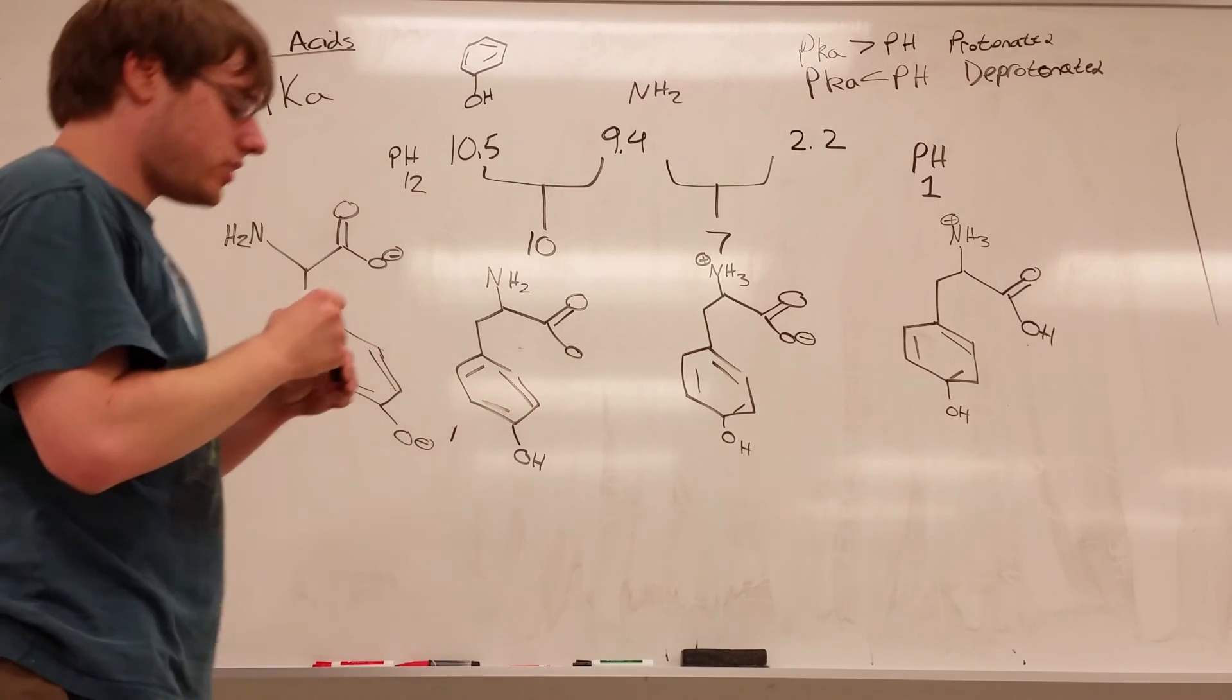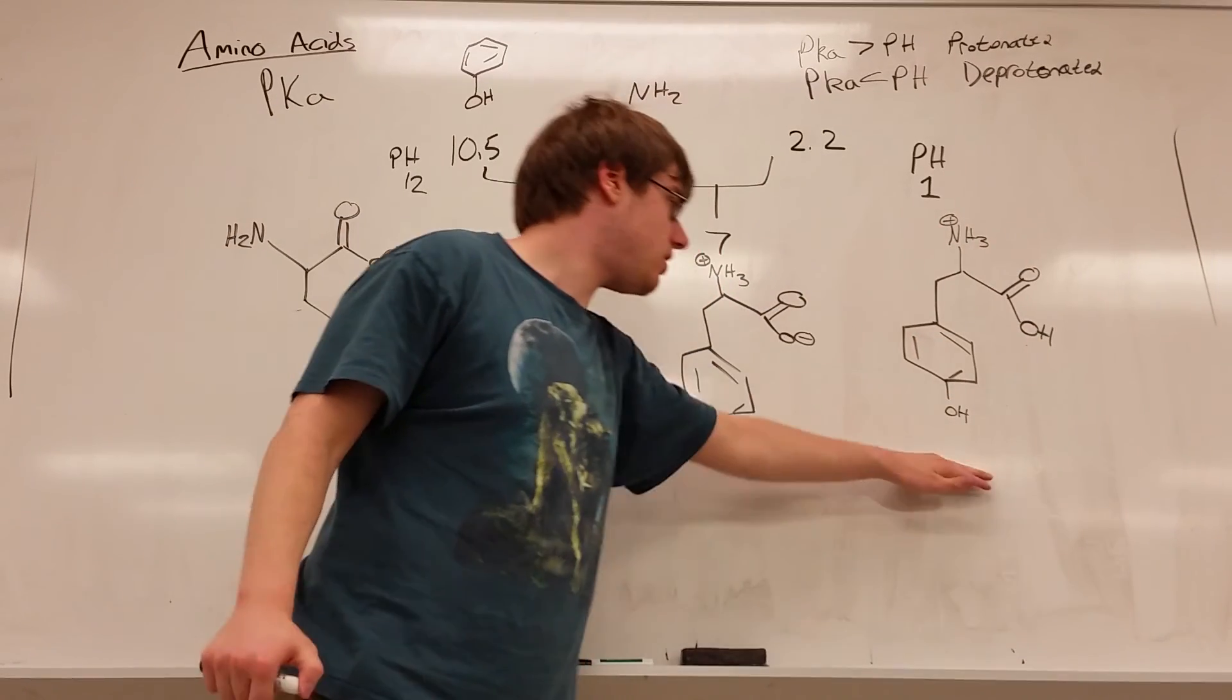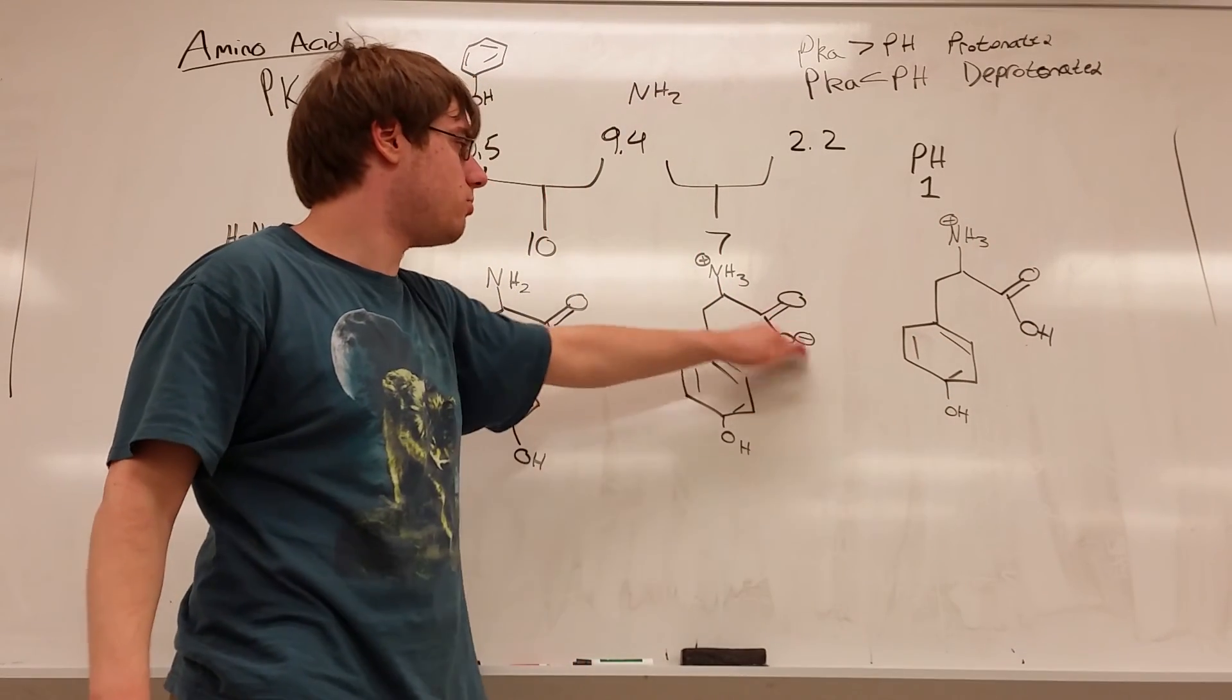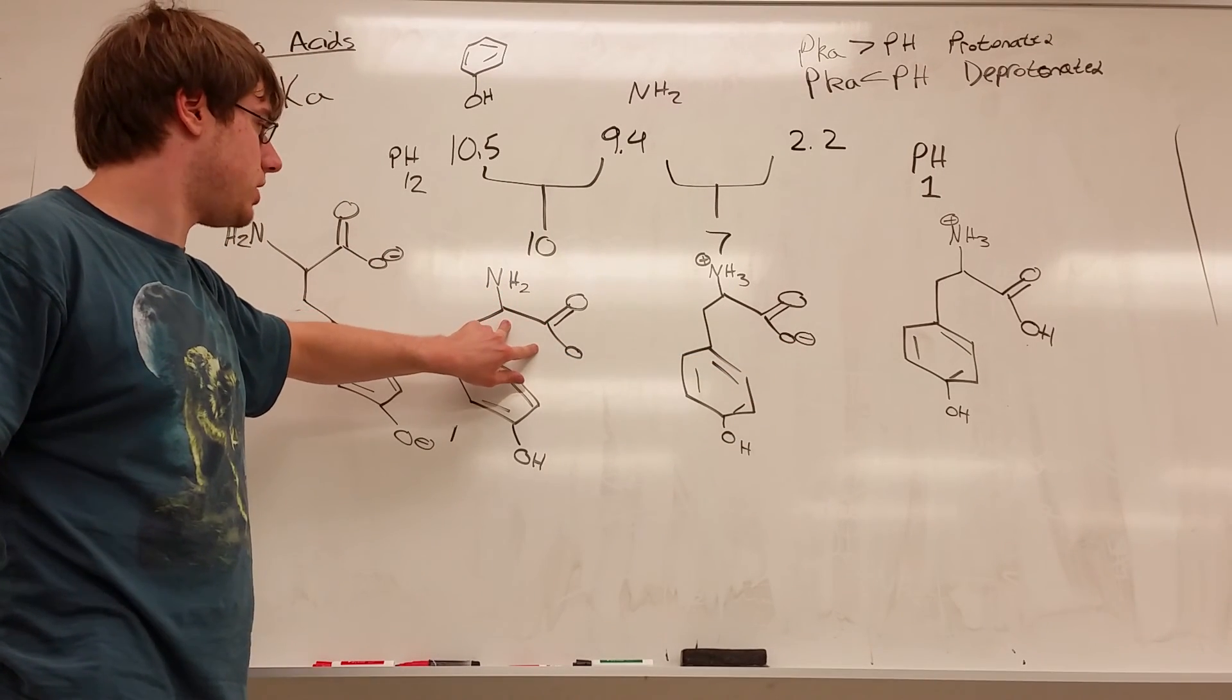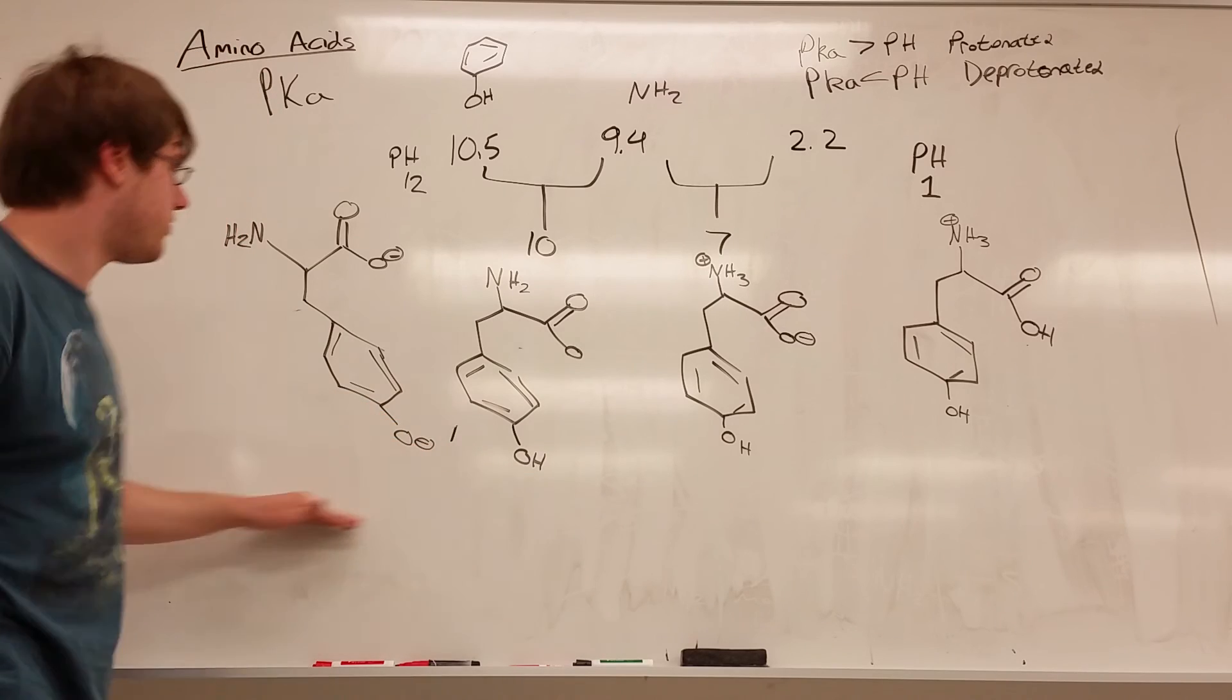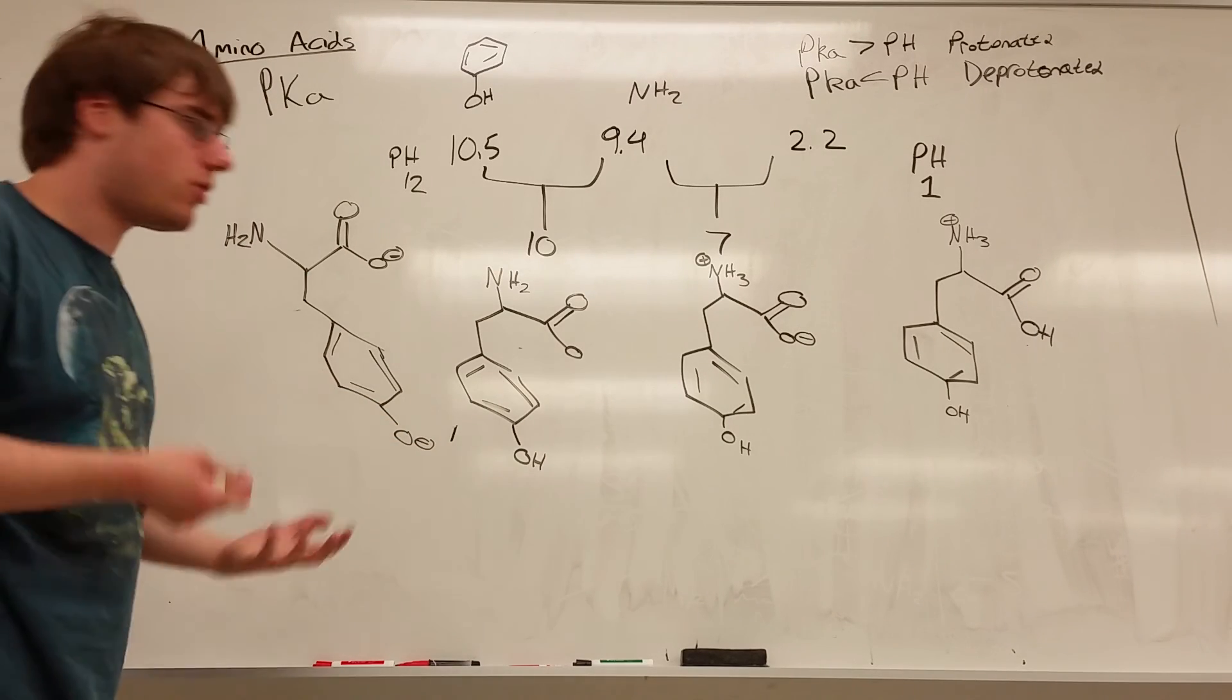So notice, as you go through each next step, you start from something where everything is protonated, you become slightly more basic, and your most acidic group became deprotonated. You go one step further, and now your two most acidic groups became deprotonated, and then you go to the furthest point possible, and now every single thing that could get deprotonated is deprotonated.